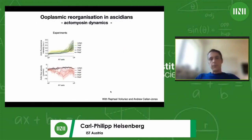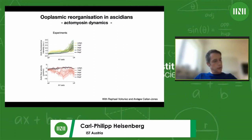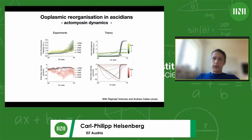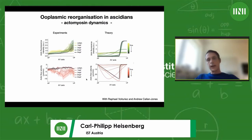At this point we teamed up with the groups of Raphael and Andrew. They used active gel theory to predict whether the actomyosin accumulation at the vegetal pole and the actomyosin flows could be recapitulated by assuming the acting cortex behaves like an active gel. They found, on a quantitative level, very similar accumulation of actin over time at the vegetal pole, matching our experimental observations. Likewise, the flow profile from animal to vegetal pole matched quite nicely between simulations and experimental observations.